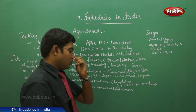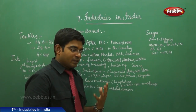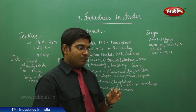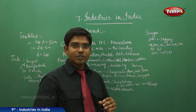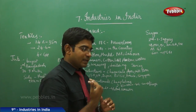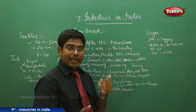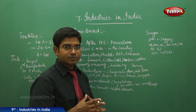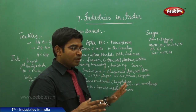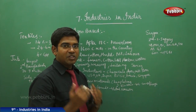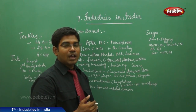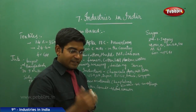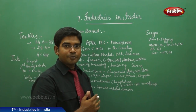Next, as I told you earlier, we have the categorization of industries. Based on the raw material being used, industries are categorized into agro-based industries and mineral-based industries. In agro-based industries, the key industries are textile industries — especially cotton and jute.